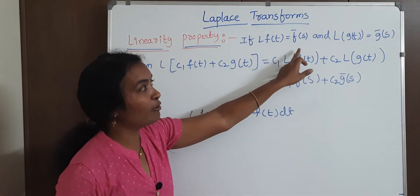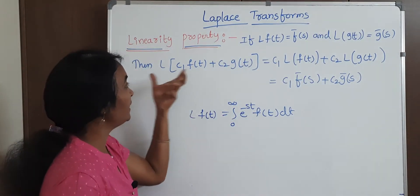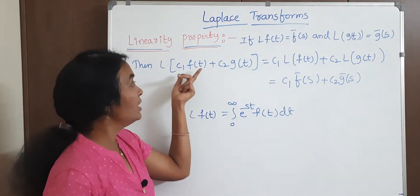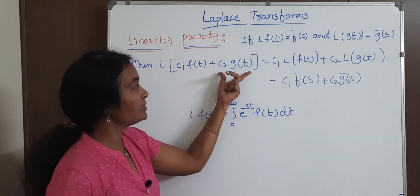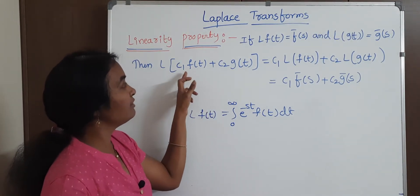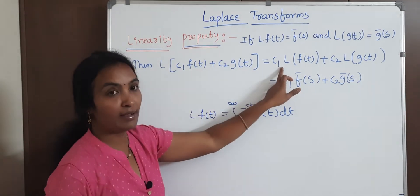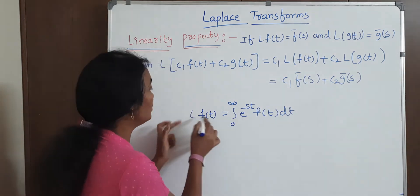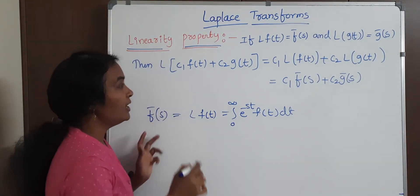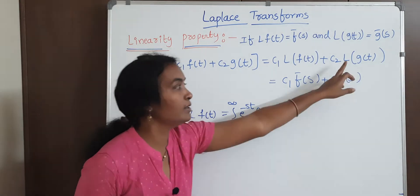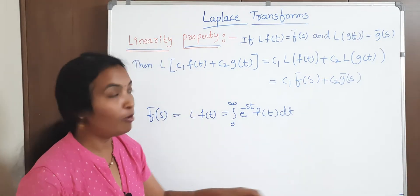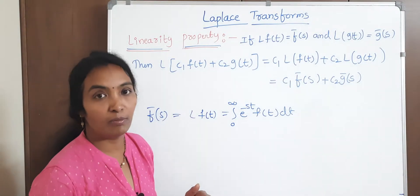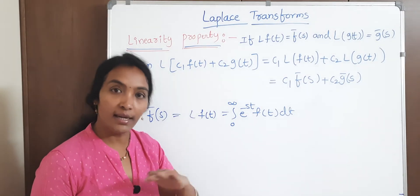The first function is f-bar of s and the next one is g-bar of s. You need to write both in combination. Suppose you have any constants, consider c1 and c2. Both constants: L of c1 f of t plus c2 g of t becomes c1 times Laplace of f of t plus c2 times Laplace of g of t, which is c1 times f-bar of s plus c2 times g-bar of s. This is the linearity property.